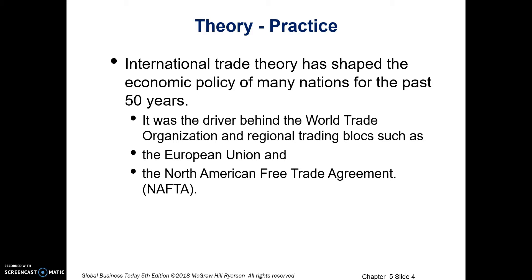This chapter attempts to address why certain trade patterns exist. Some are fairly easy to explain — we understand that Saudi Arabia exports oil, Ghana exports cocoa, Brazil exports coffee. But the more difficult question, and this is some of the premises for the different trade theories, is to explain why, for example, Switzerland exports chemicals, pharmaceuticals, watches, and jewelry, or why Japan exports automobiles, consumer electronics, and machine tools. The various trade theories in this chapter will attempt to explain and answer those questions.